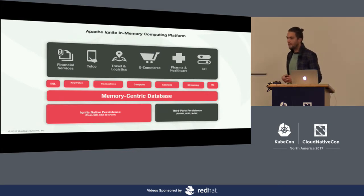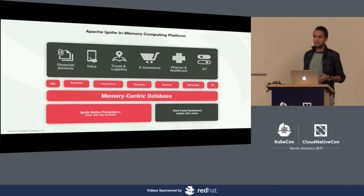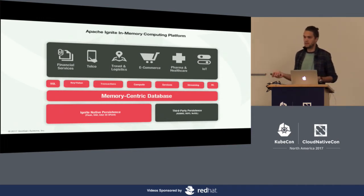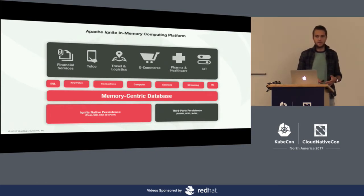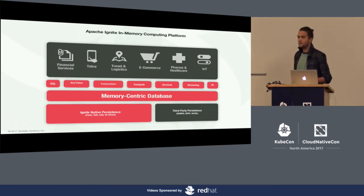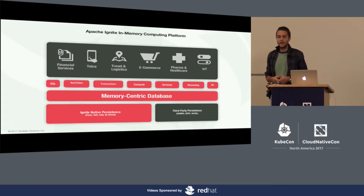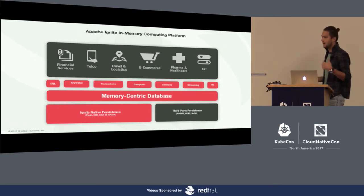When many companies go into production, they think about durability — if by some reason a cluster goes down, the data will be lost. To avoid this you can enable persistence. Ignite supports its own native persistence, which is also distributed across the cluster, or you can use a third-party persistence such as a relational database or NoSQL database. On top of this distributed storage, the community built components such as key-value APIs, SQL queries, computations, machine learning algorithms, and many more.